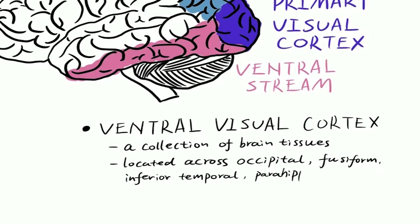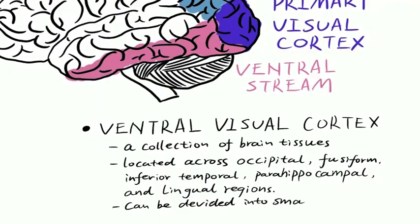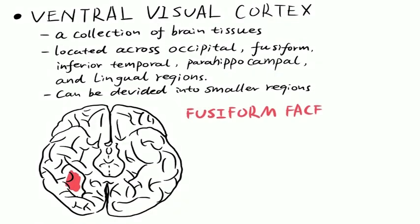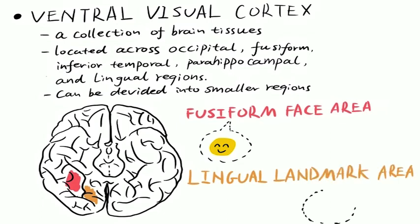It can be divided into many smaller regions, each responsible for recognizing different types of visual information. For example, faces are processed in the fusiform face area, while scenes and the environment are processed in the lingual landmark area.